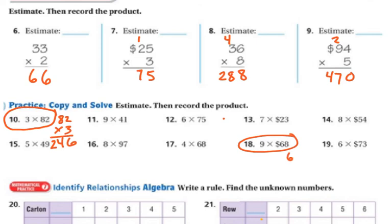So I have 68 times 9. So I've got 9 times 8, which is 72. So I'm going to regroup my 7 tens, put my 2 ones down here. And now I have 9 times 6, which is 54, plus my 7.